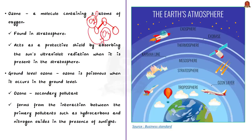Generally, ozone is found in the upper layers of the atmosphere called the stratosphere. It is known for deflecting harmful UV radiations from the sun, which is why we are worried about the depletion of the ozone layer near the polar regions. But the story is different when ozone occurs near the ground.